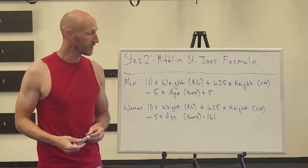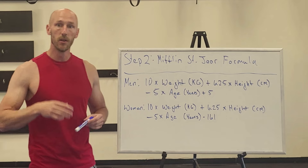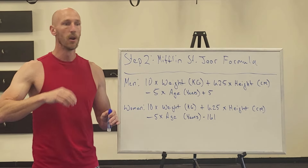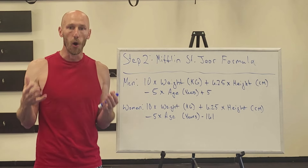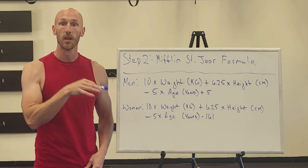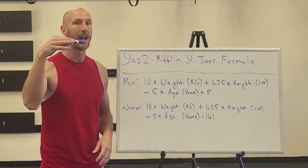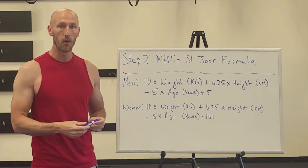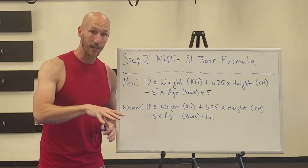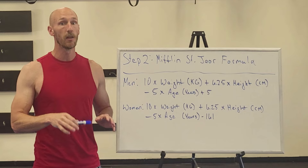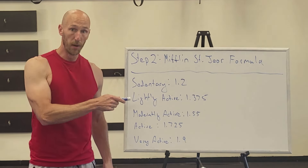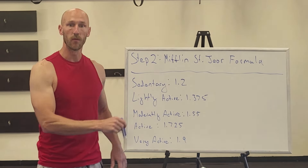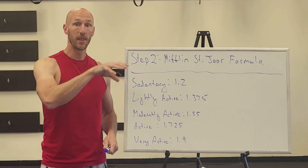I just wanted to show you the formula and have you know that this is very much based on science — we're not just guessing. We're going to make sure this is correct and personalized to you based on your weight, height, age, and all that. Once we figure out our BMR, we're going to multiply that by our activity level. The activity level categories are: sedentary, lightly active, moderately active, active, or very active.